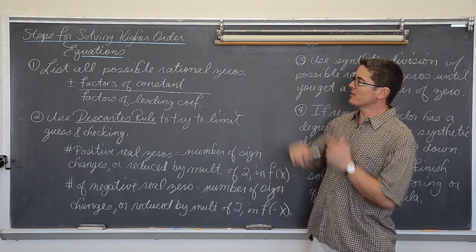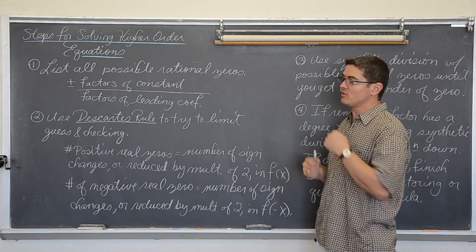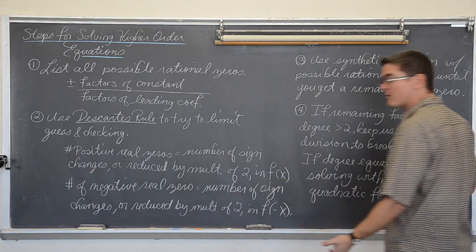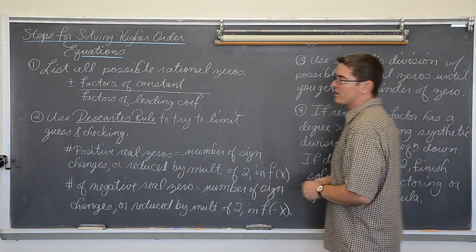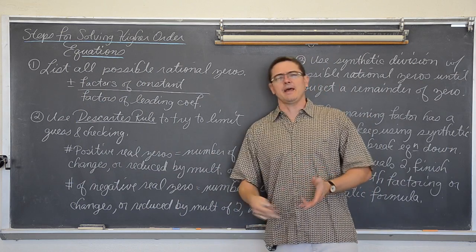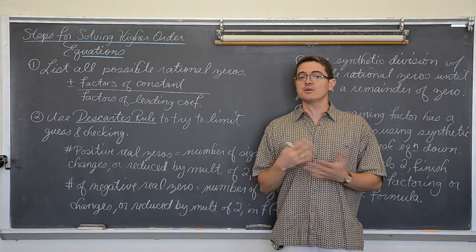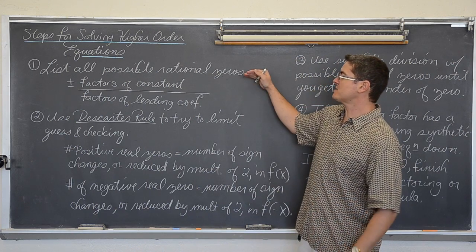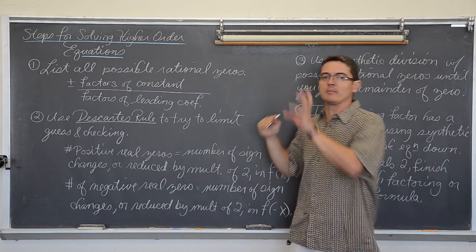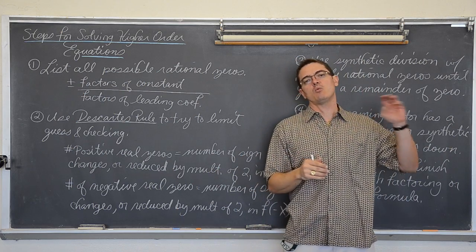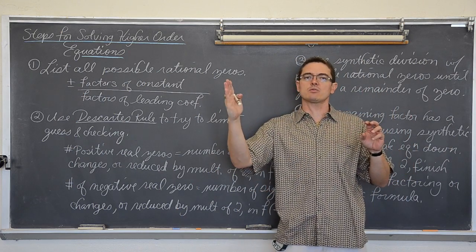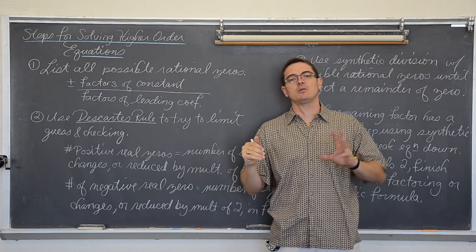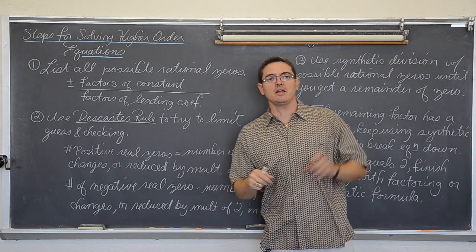The first thing we want to do is look at an equation and identify that the highest exponent is bigger than 2. How do you solve that? Well, the first step is to put it in general form — get all those exponents to count down by 1 with the highest degree first, in my case an exponent of 3, and the constant out at the end.